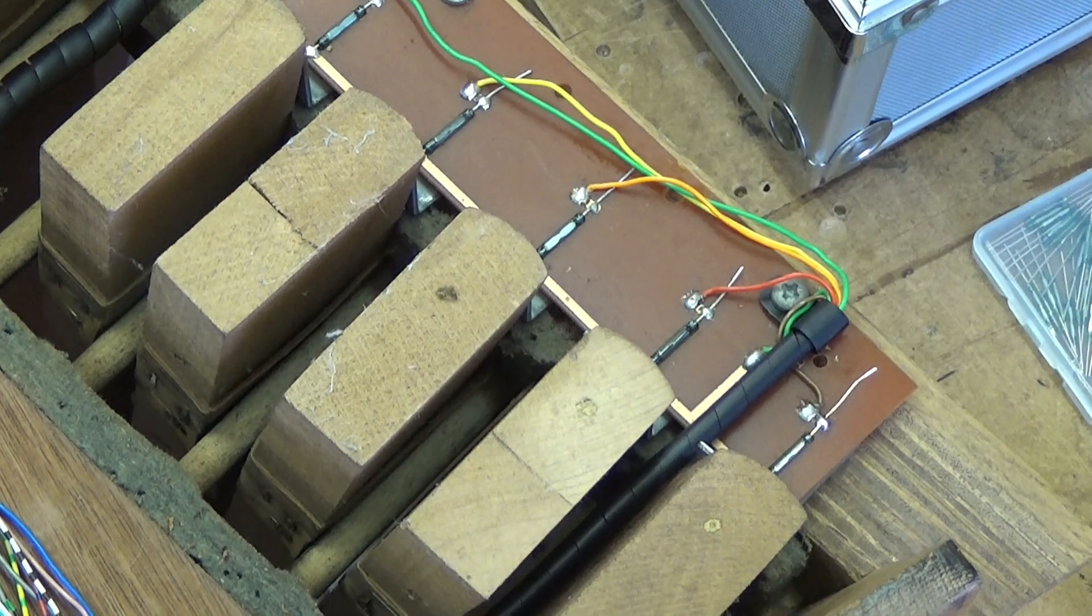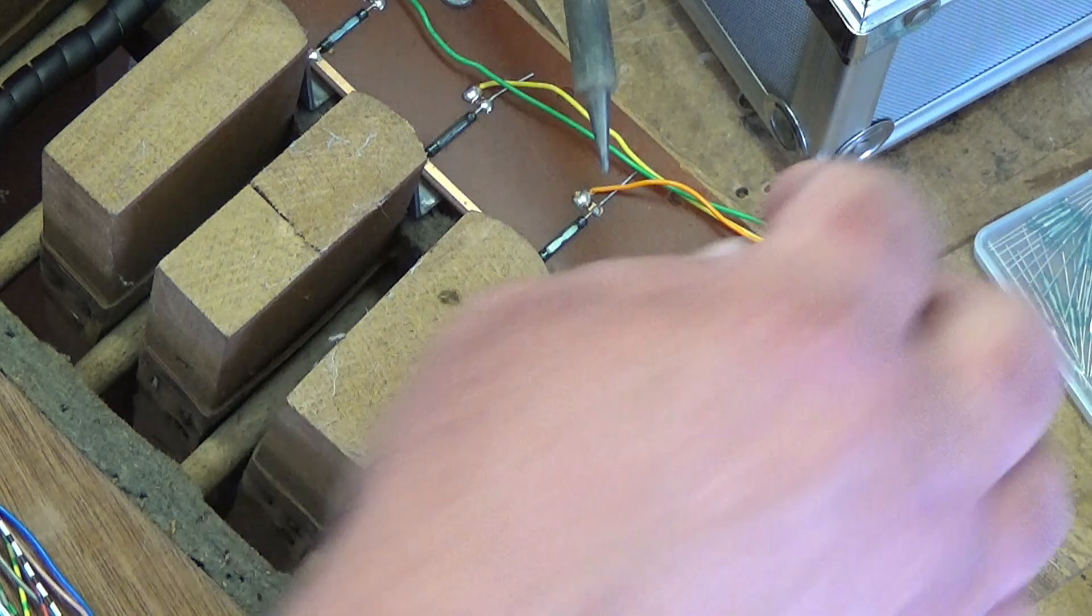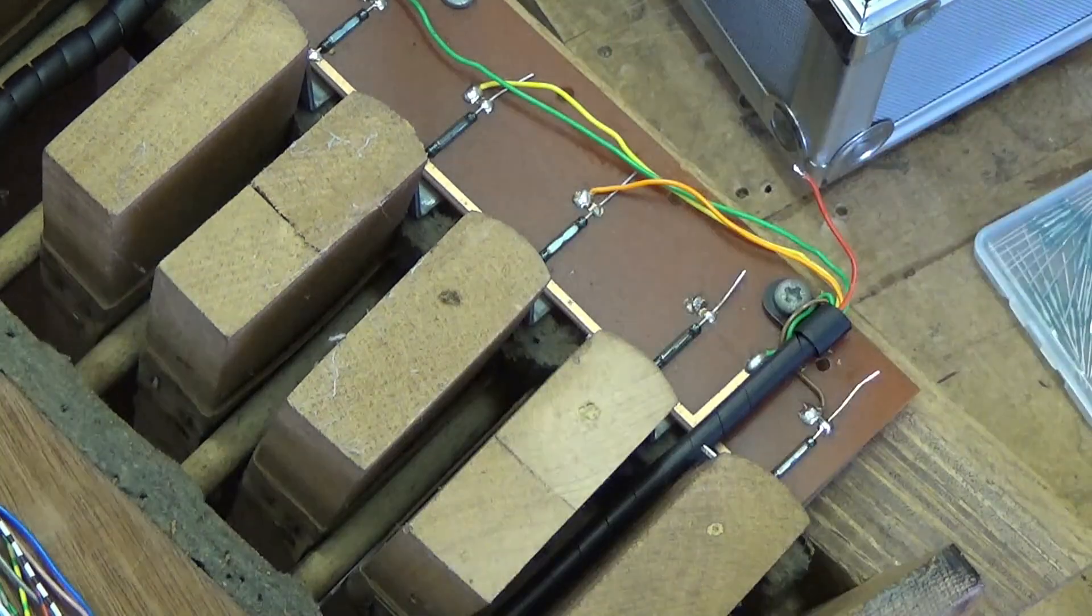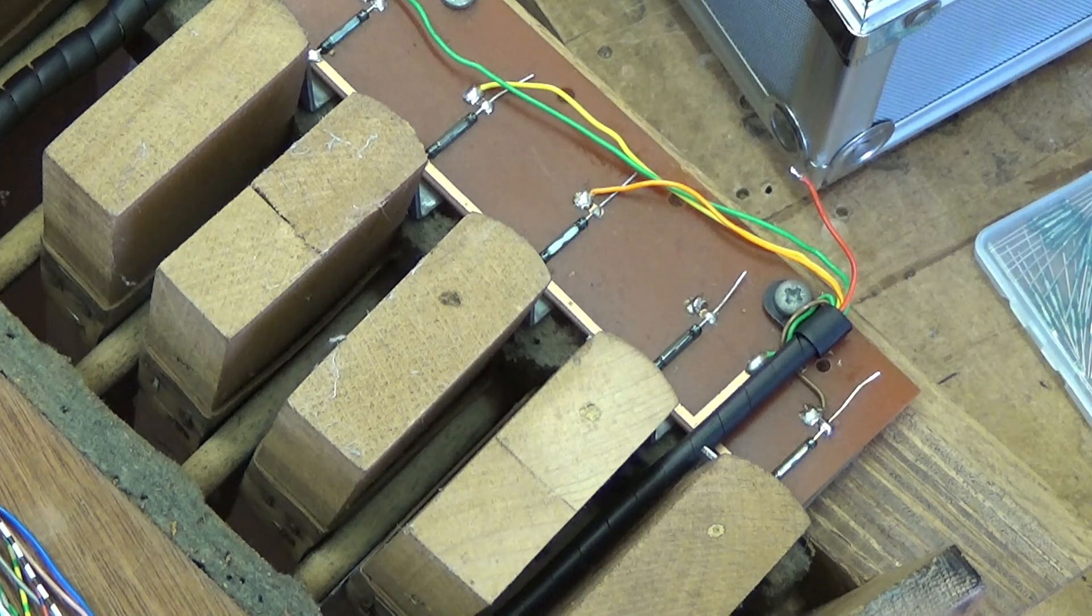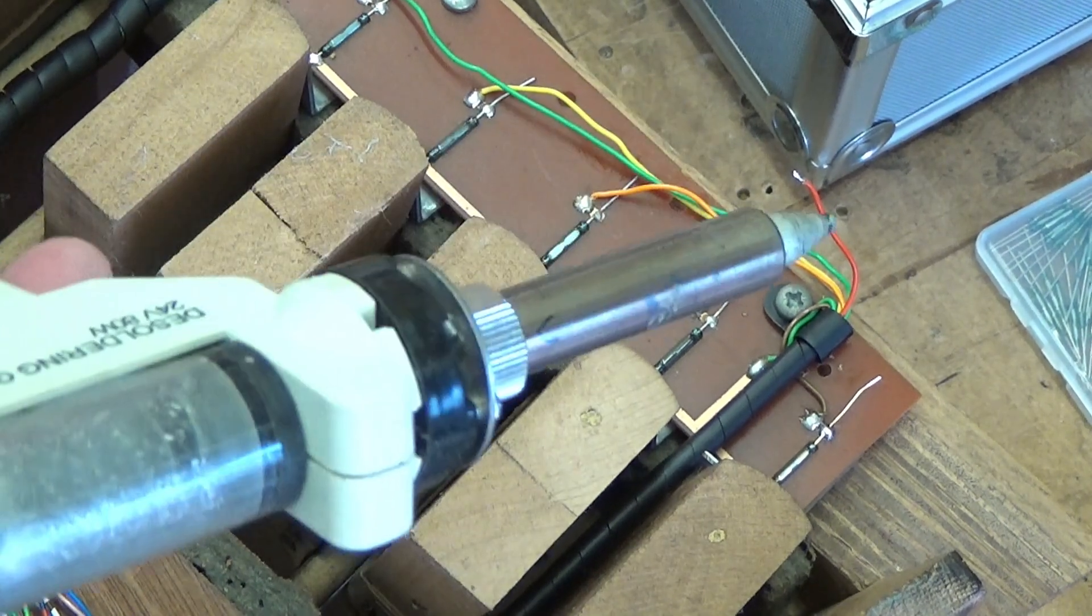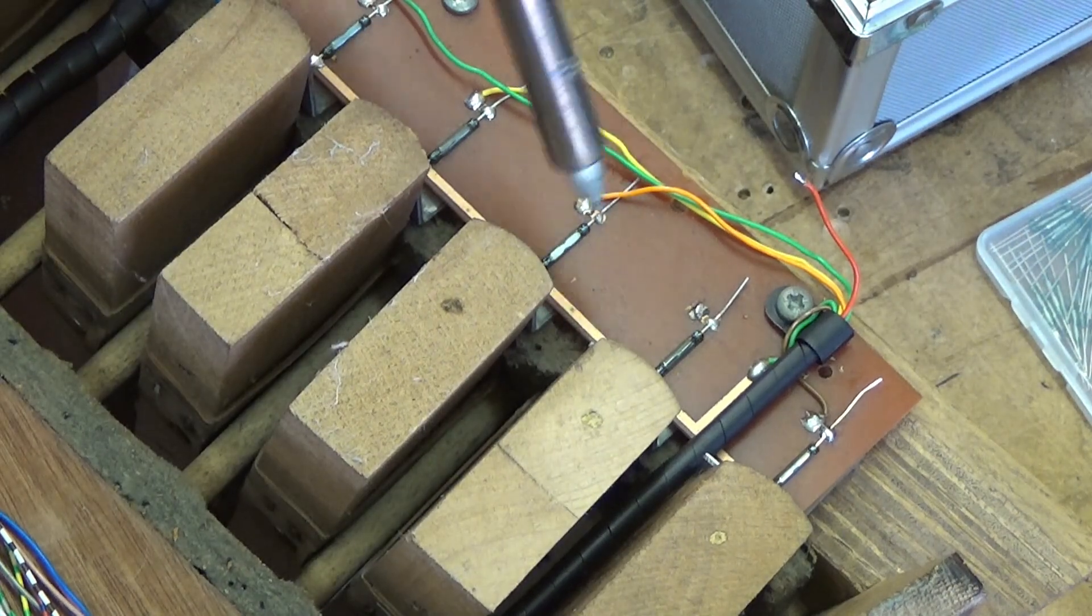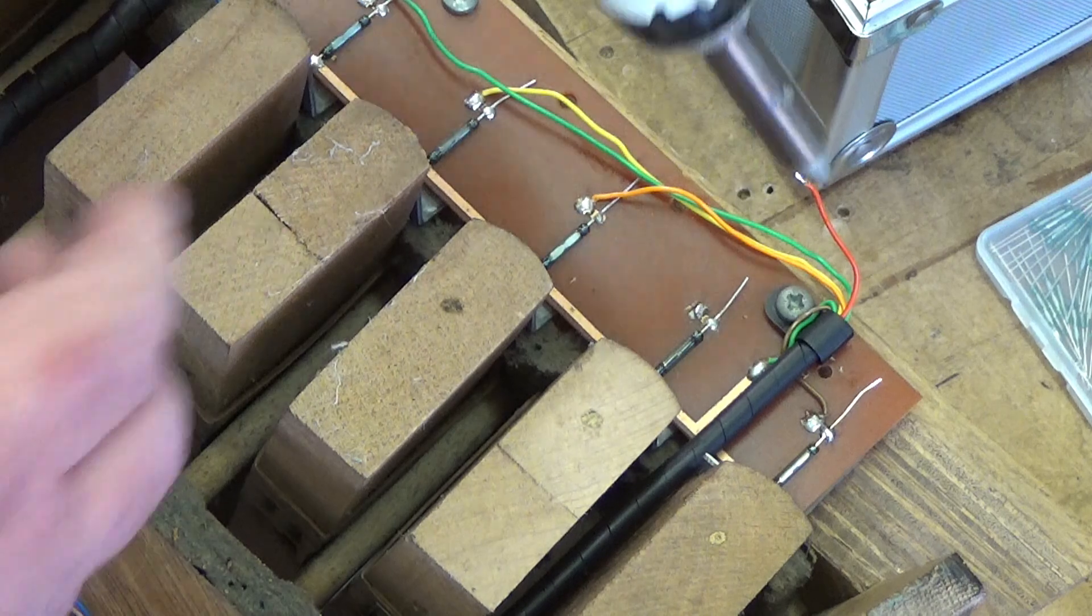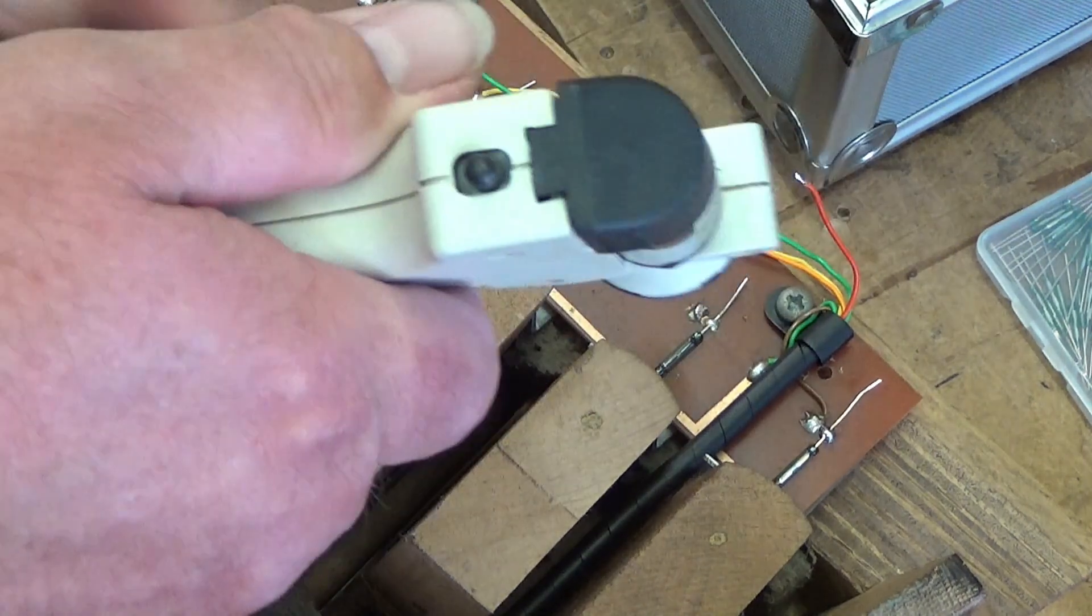OK, so I'm going to remove this faulty reed switch now. So first of all, we'll just unsolder the wire from it. And then rather than just heating up the solder and lifting the switch up, I'm going to use my desoldering tool to actually remove the solder first. I don't want to damage the reed switch in any way. I want it to come out in perfect condition.